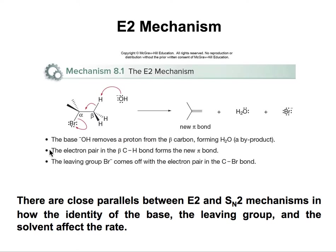Looking at the mechanism: here I have my alpha carbon, which is the one connected to the halogen. The beta carbons are the ones one position over. These two would also be beta carbons, but we'll talk later about whether their hydrogens will or will not be taken. In this particular case, all of them are the same — this carbon is the same as this one and this one — so it doesn't matter where we take the hydrogen. There are nine hydrogens available in total.